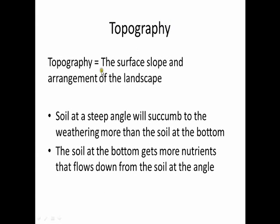Topography is the surface slope and arrangement of the landscape. Soil at a steep angle will succumb to weathering more than soil at the bottom, since water and rain from thunderstorms will wash away the soil more often. The soil at the bottom gets more nutrients that flow down from the soil at an angle, since all the organic matter flows down when it rains.